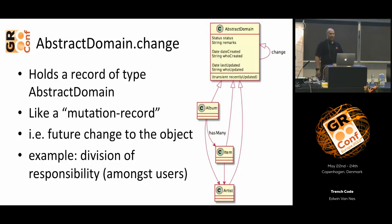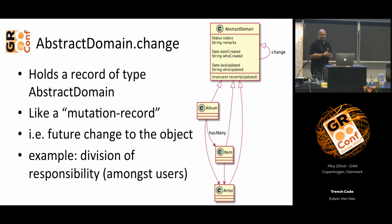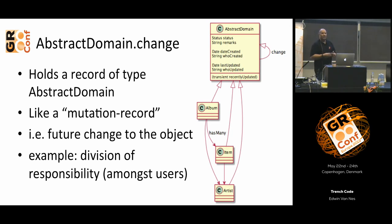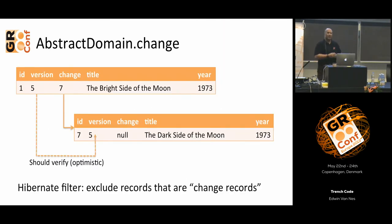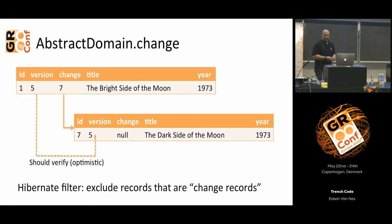Another funny thing is a reference to a change record. It holds a similar record which is abstract domain because it's all inherited from there, and we use that like a mutation record. So if you want to have a future change for an object, you can just put it there. More often it's used for a division of responsibility: one user has to change things but another user has to accept the change before it actually becomes available in the database. It's just another record and another Hibernate filter to prevent these change records from being displayed among the other records.